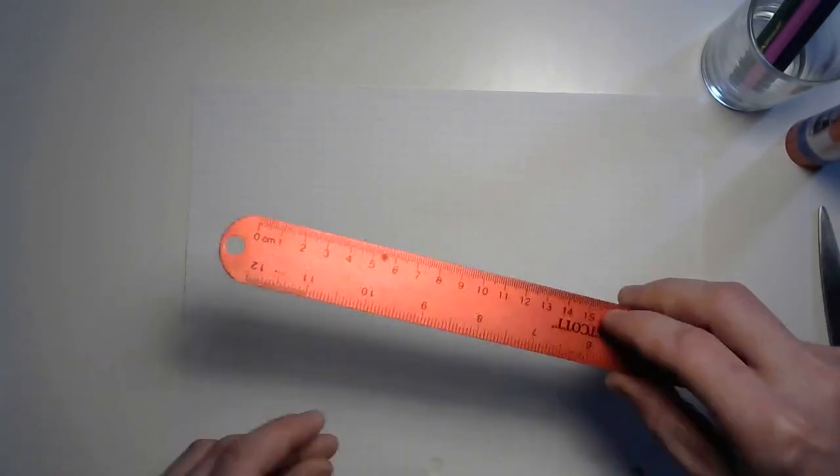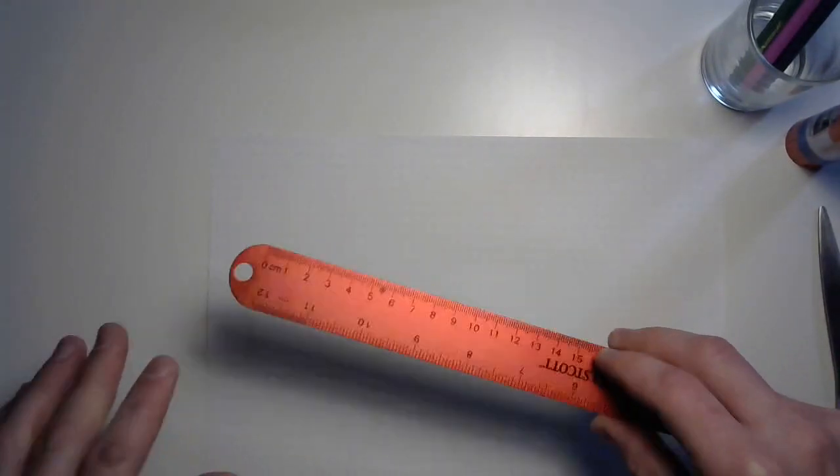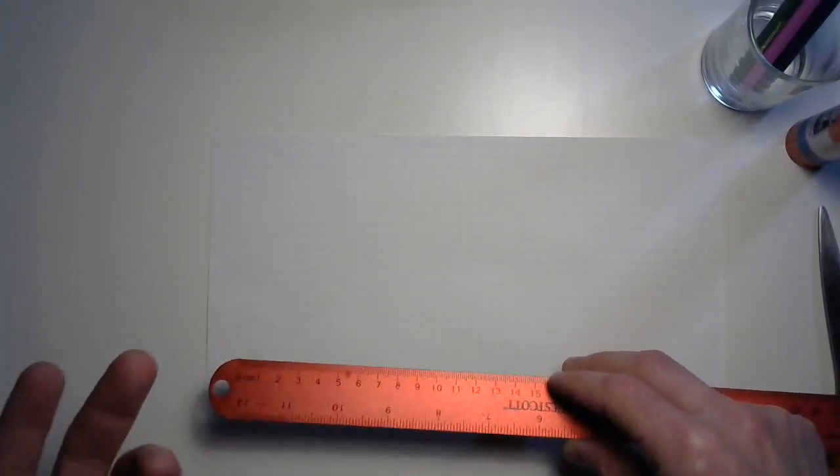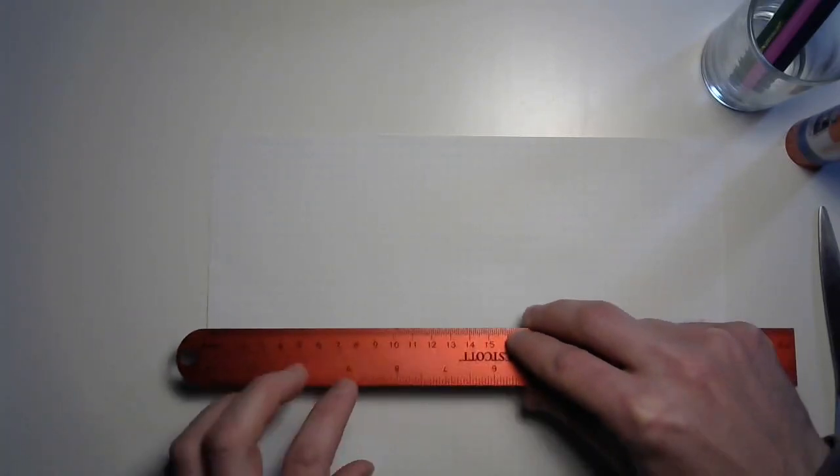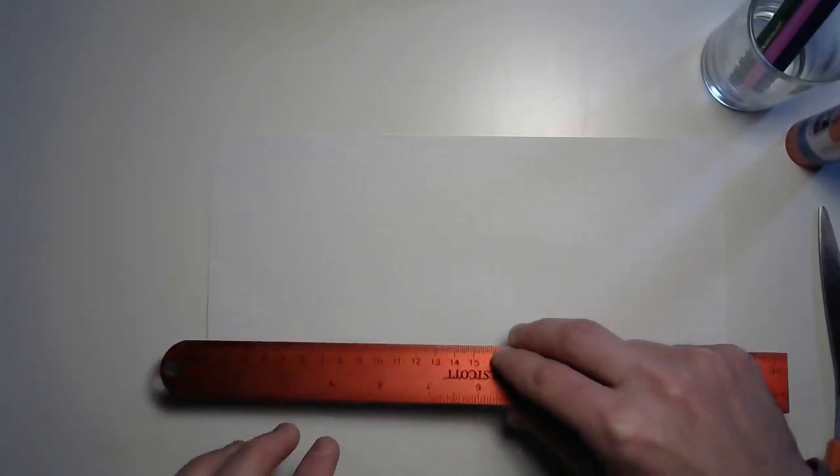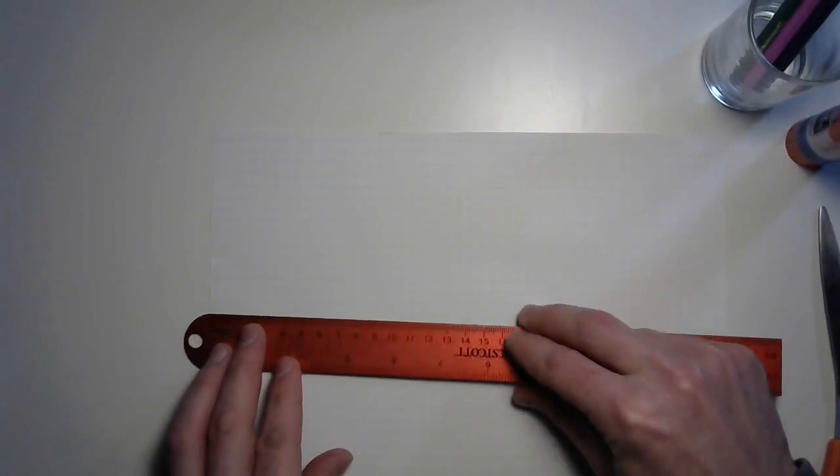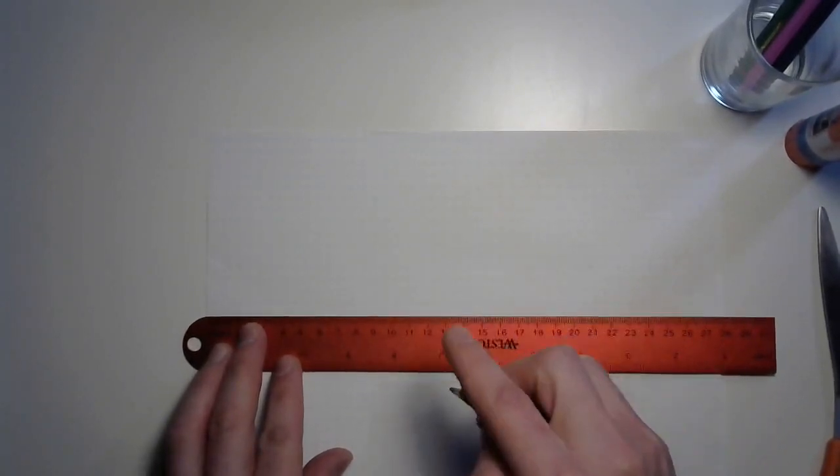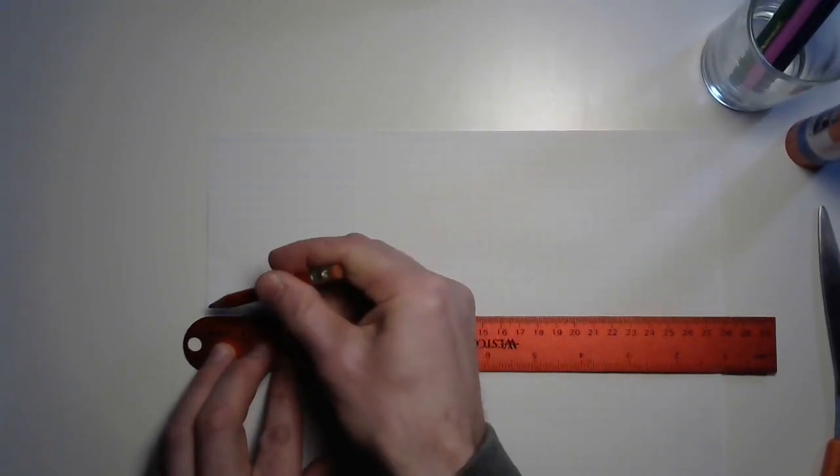We really don't actually have to do too much measuring, but we will need this straight edge to make nice straight lines. We're going to begin by making equilateral triangles. Remember that's a triangle that has three sides that are all equal. I've got a little trick for you to help you with that.